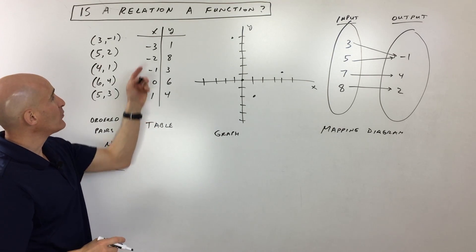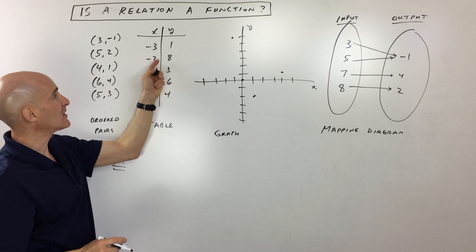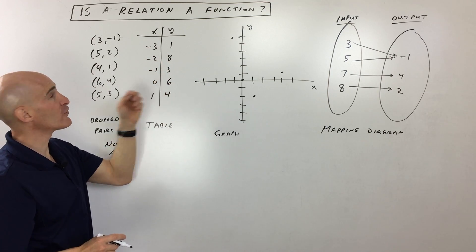For the second one, this table, same thing—you're matching an X value with a Y value. Negative two maps with eight, negative one maps to three, zero to six, one to four.